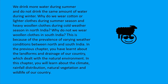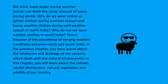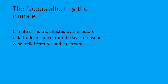So in this unit we will see why North India has cold seasons while Tamil Nadu does not feel such extreme cold in winter. What is the difference? How is the rainfall different? We will look at the factors that affect climate. In India the factors are: latitude, distance from the seas, monsoon wind, relief features, and jet stream.